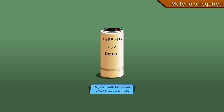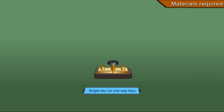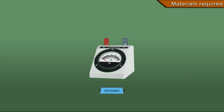Dry cell with terminals, G6 ever-ready cell; 10 pieces of insulated thick copper wire with bare ends; single key or one-way key A; ammeter.